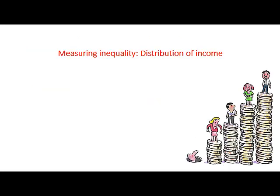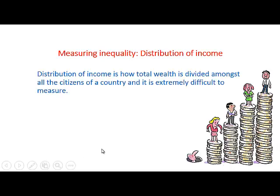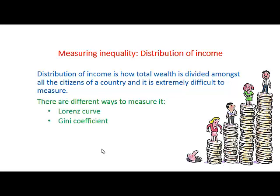When we look at measuring inequality, we look at the distribution of income in an economy. The distribution of income is how total wealth is divided amongst all the citizens of a country, and this is extremely difficult to measure. We will look at two ways to measure it: the Lorenz curve and the Gini coefficient.